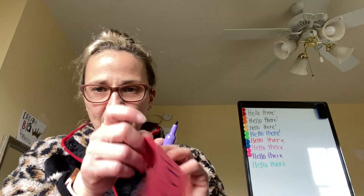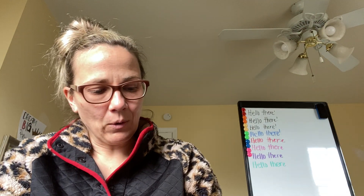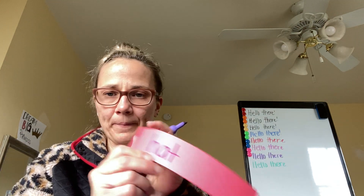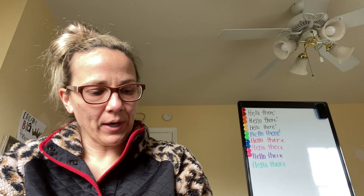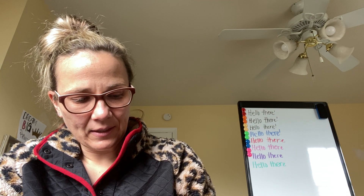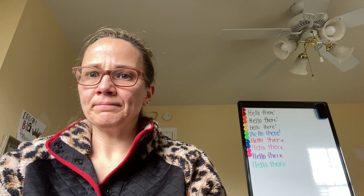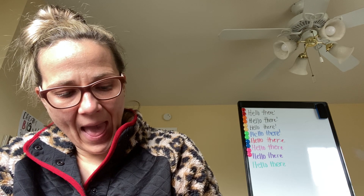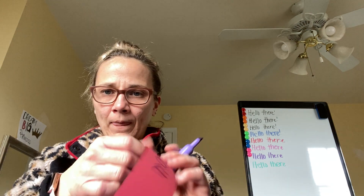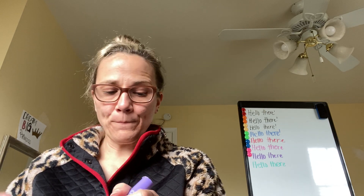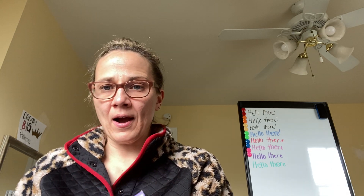Mrs. Macrina is going to write the word 'cat' on one strip of paper, and the word 'hat' on my next strip of paper, and the word 'bat.' What other CVC word could fit in my 'at' family? Mat. So I'm going to write mat. So now Mrs. Macrina has four words that belong in our 'at' family.